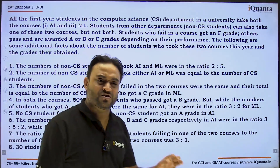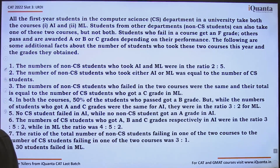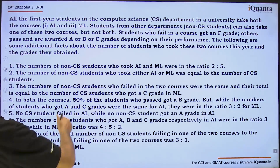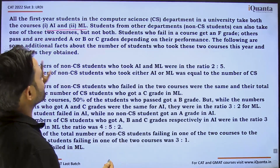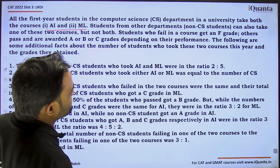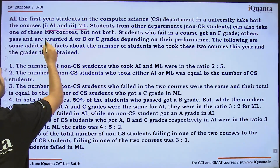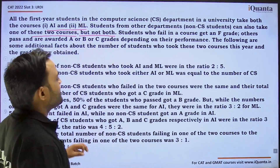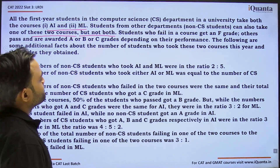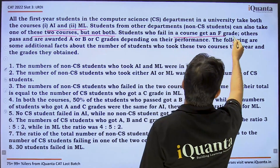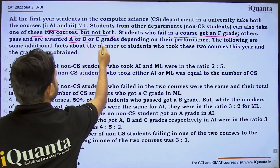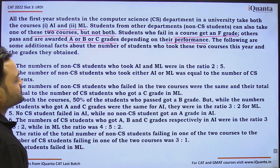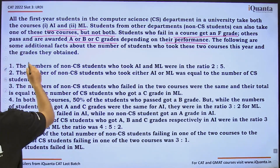This set is totally based on interpretation of ratio and nothing else. All the first year students in the computer science department in a university take both the courses AI and ML. Students from other departments — non-CS students — can also take one of these two courses, but not both. No students from non-CS departments are taking both the courses. Every student is taking exactly one of these two courses. Students who fail in a course get an F grade; others pass and are awarded A, B or C grades depending on their performance.